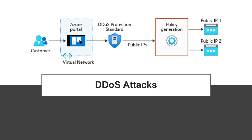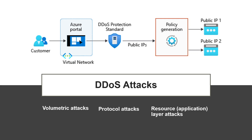The aim of a distributed denial of service, or DDoS attack, is to overwhelm the resources on your application and servers, making them unresponsive or slow for genuine users. A DDoS attack will usually target any public-facing endpoint that can be accessed through the internet. There are three most popular types of distributed denial of service attacks: volumetric attacks, protocol attacks, and resource layer attacks — also known as application layer attacks.